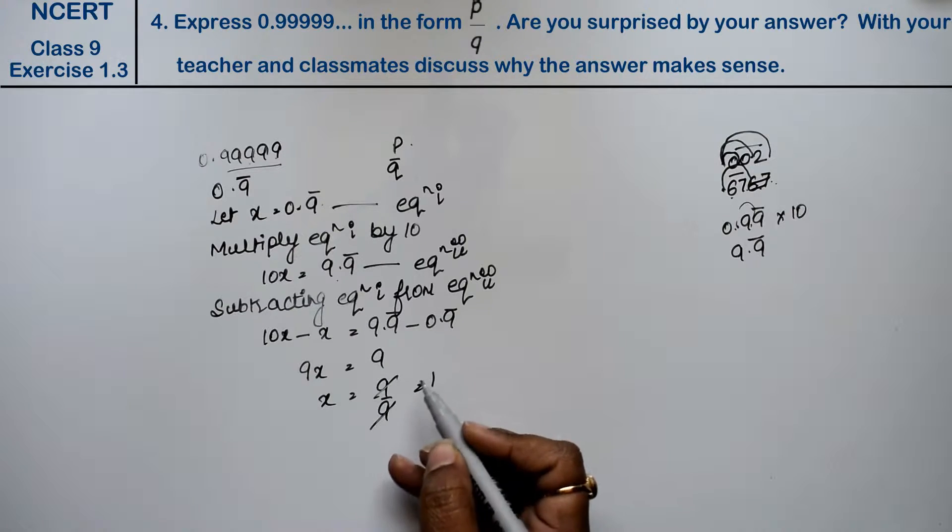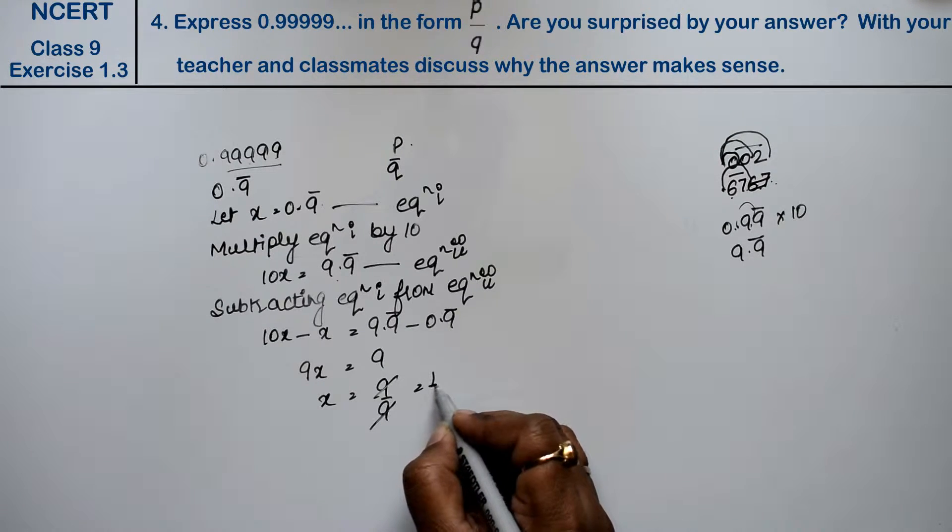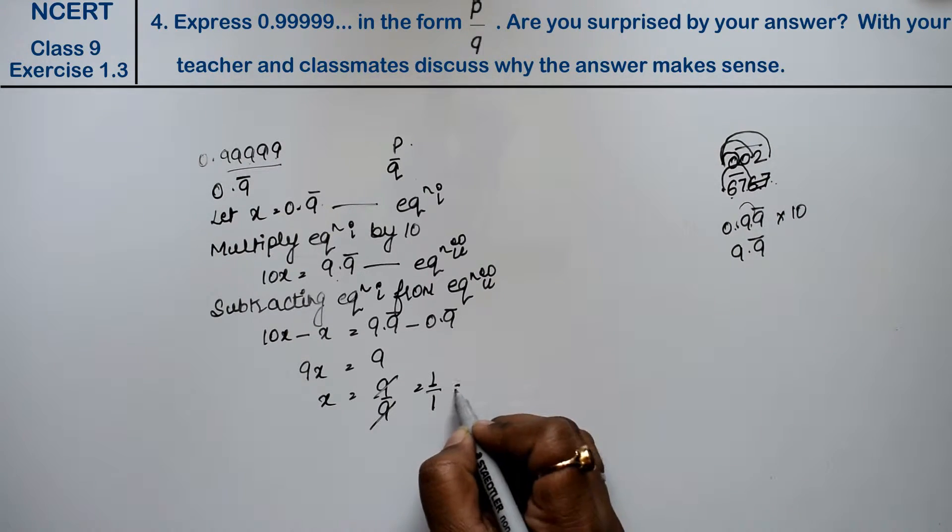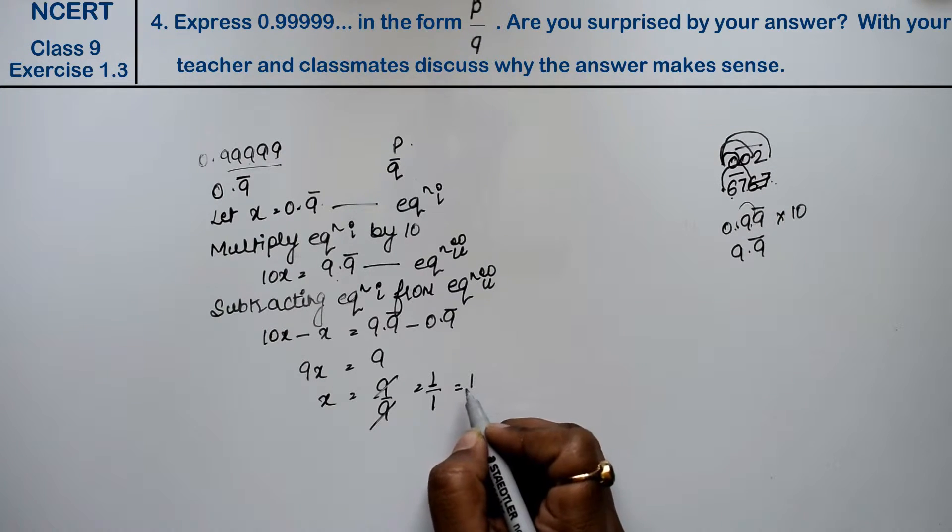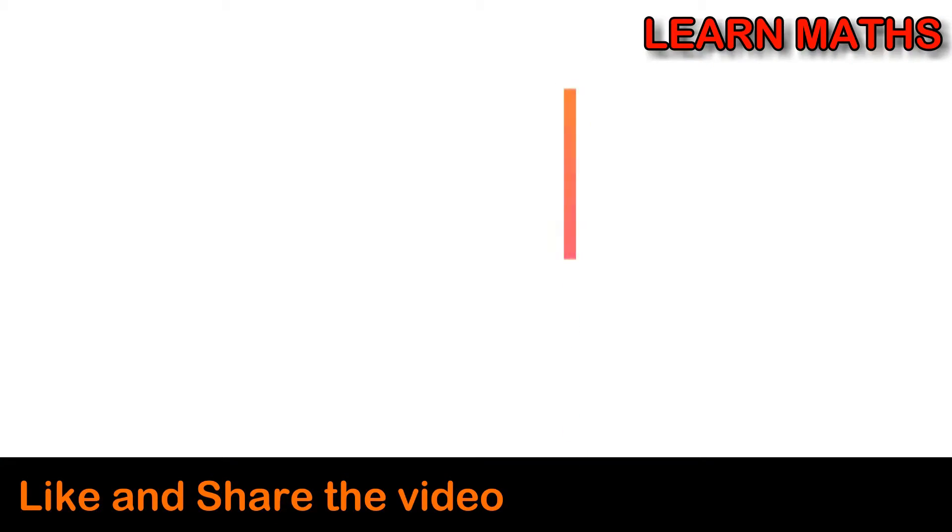So 1 is also a rational number, a whole number, a natural number. This is the number that we can write as 1 upon 1, so the answer will be 1. That's why we are surprised by seeing this answer.